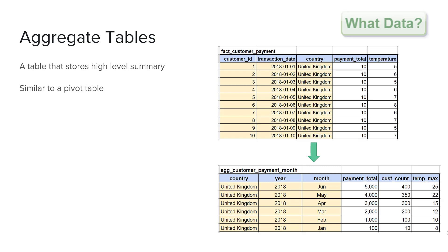The first attribute I typically consider for aggregation would be related to time. For example, if I am reviewing customer transaction data, I may want to aggregate this data on the hourly level if I was looking at a specific narrow band of time and wanted to identify key hours during the day when customers are visiting our website. Next will be daily level information to identify given days of the week when customers are most active, followed by more broad time ranges such as week, month, quarter and year.